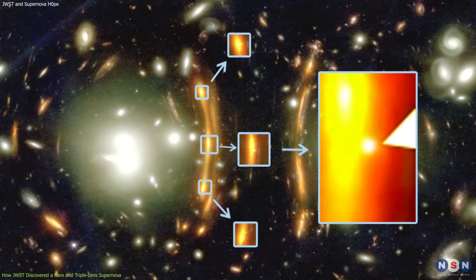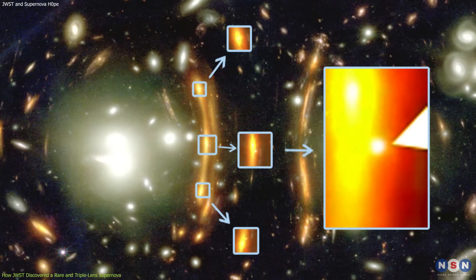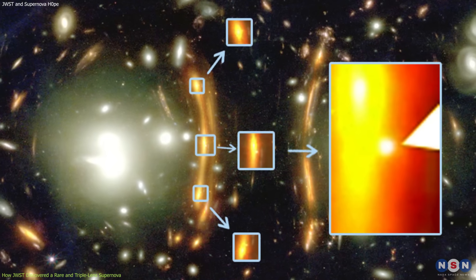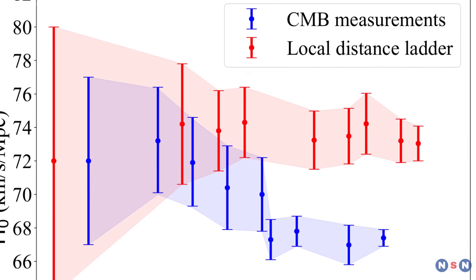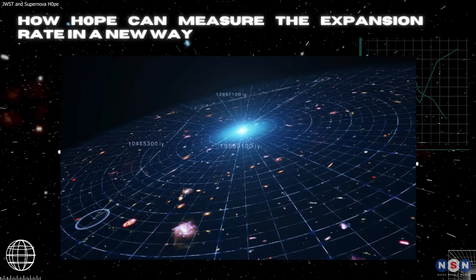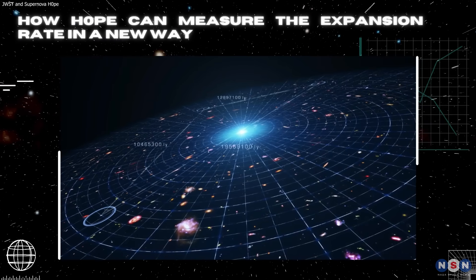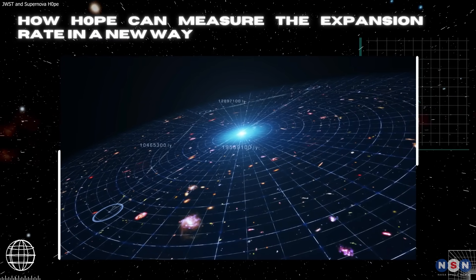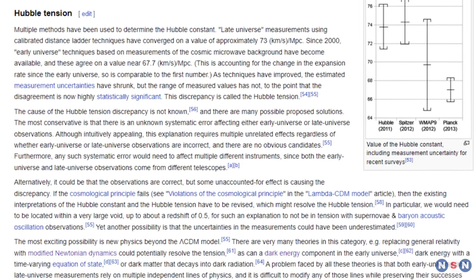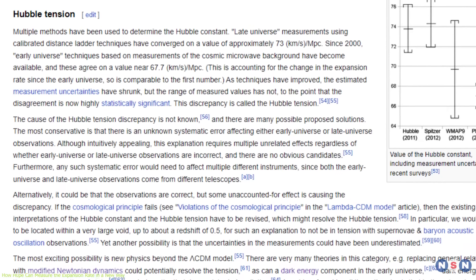Why did they choose this name? Because this supernova could help solve one of the biggest mysteries in cosmology, the Hubble tension. So, what is the Hubble tension, and how can this supernova help solve it?